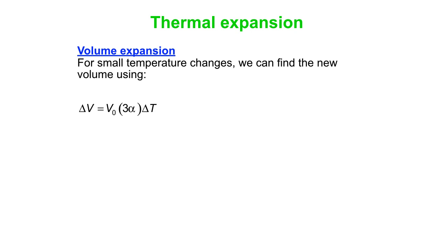If it was area, you'd do delta A is A0 2 alpha delta T. So each dimension gets you another factor of alpha. Or you could say the new volume is the old volume multiplied by 1 plus 3 alpha delta T. And V0 is the original volume. That is it for today.